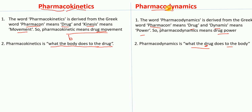Here's a memory tip: for pharmacodynamics, drug comes first — what the drug does to the body. For pharmacokinetics, body comes first — what the body does to the drug.